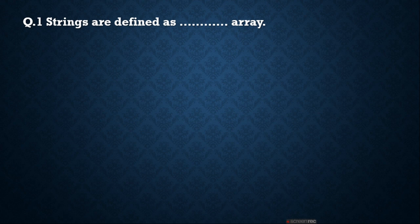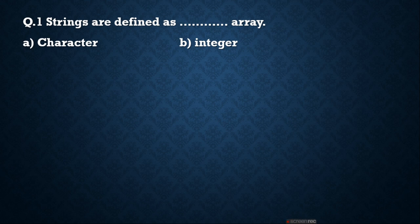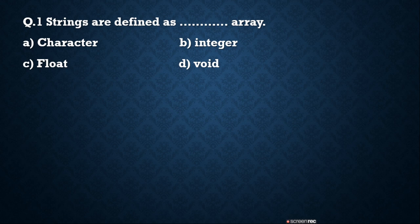Strings are defined as a blank array. Options are: character, integer, float, void. As I told, the definition of string — string means set of character array. So the correct answer is A, character array.